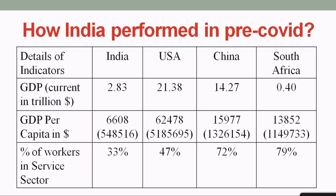GDP also has its own limitations. For example, GDP cannot tell you how technology is used — tomatoes produced today involve different technology than 50 years ago. GDP also will not be helpful to understand the price level. We will discuss in another session the major limitations and how to overcome them by including other development indicators. Thank you so much for your detailed information on India's GDP, sir!